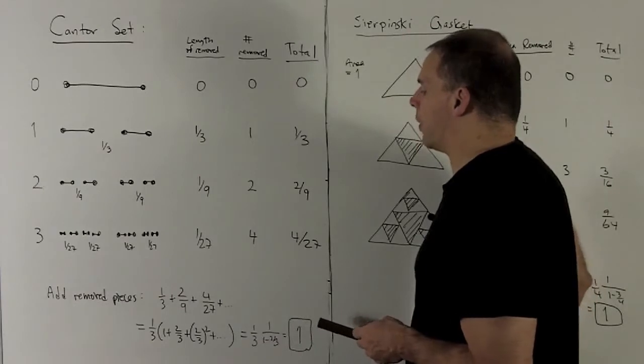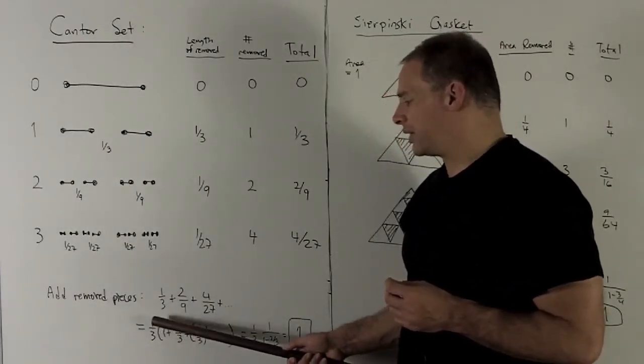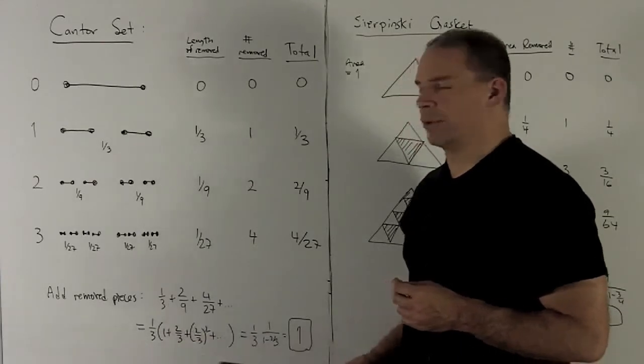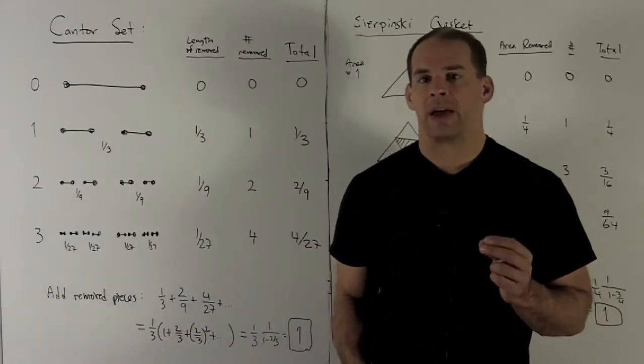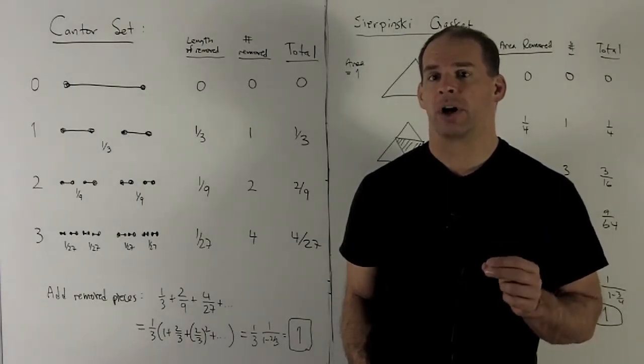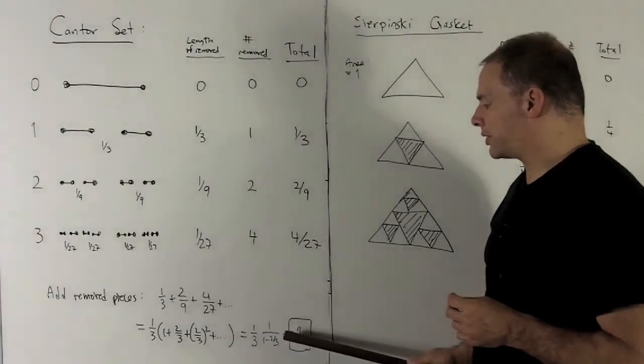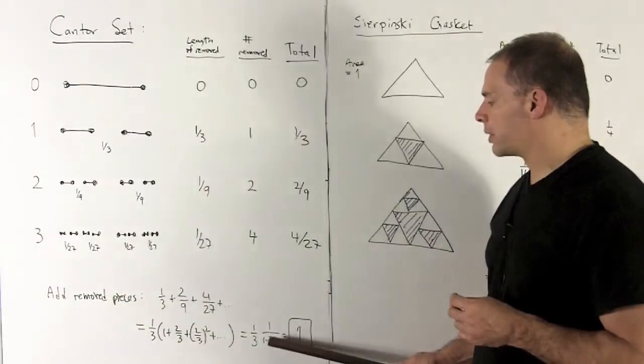So this is a geometric series: a equals one third, r equals two thirds. The absolute value of r is less than one, so this geometric series is going to converge. Its sum is going to be one third times one over one minus r, where r is two thirds.